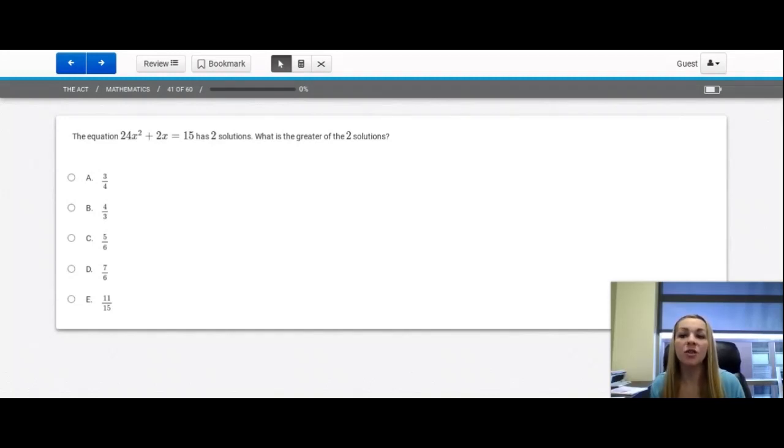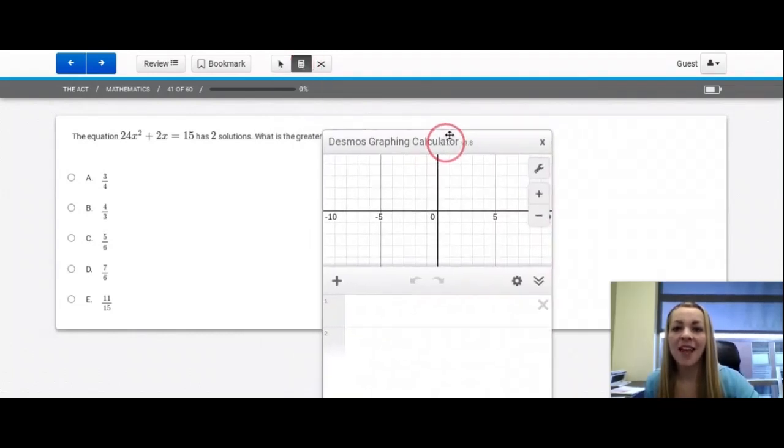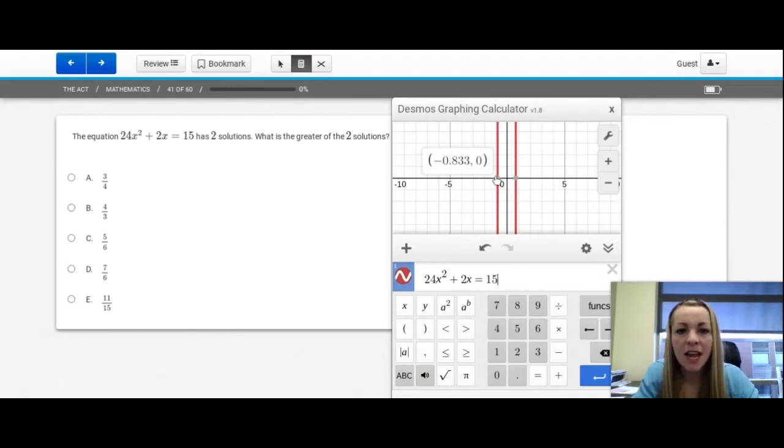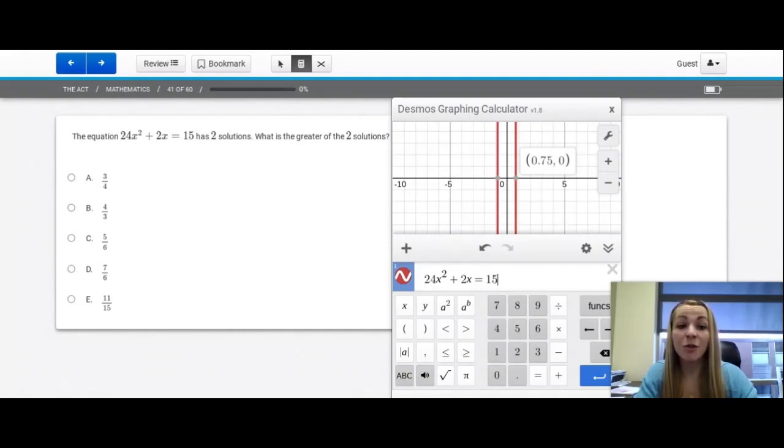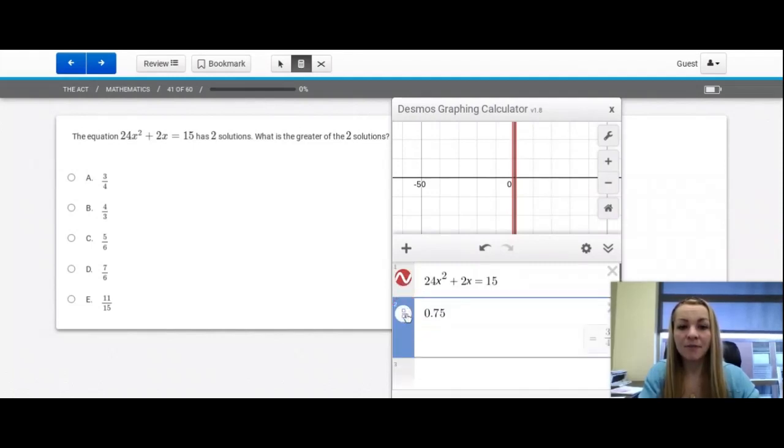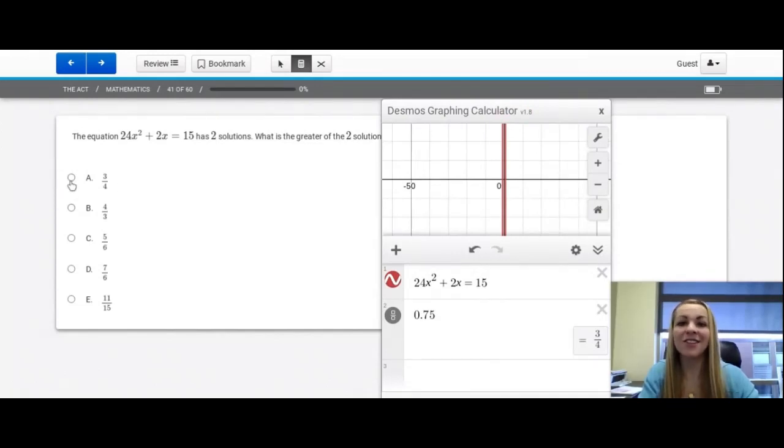Question number 41. The equation 24x squared plus 2x equals 15 has two solutions. What is the greater of the two solutions? This is a quadratic that you have to solve and I think this is a great opportunity to use Desmos to do some work for you. Click on the Desmos graphing calculator and type the equation in. 24x squared plus 2x equals 15. It looks like the two solutions are negative 0.833 and 0.75, and it's asking which one is the greater of the two solutions. This is the greater, 0.75, and 0.75 as a decimal is 3 fourths. But if you don't know that, just come here, type 0.75, come to this fraction button and you'll see that that is 3 fourths. So this is answer A. Look how fast that was to complete that problem.